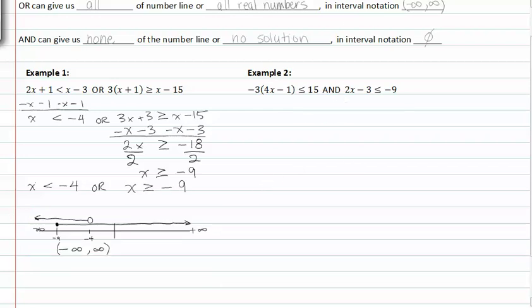Let's work on example two next. Distributing the negative three, we get negative 12x plus 3 is less than or equal to 15, and 2x minus 3, let's add three to both sides.